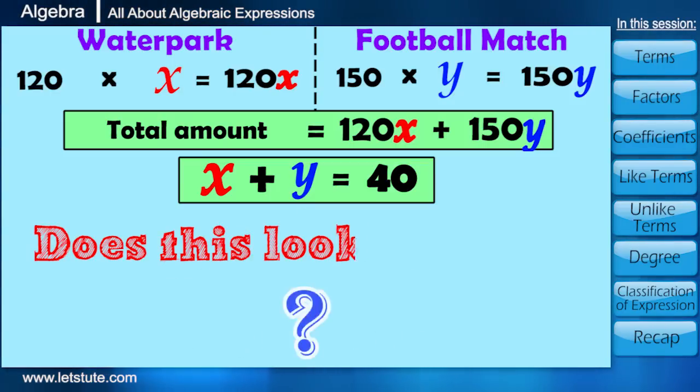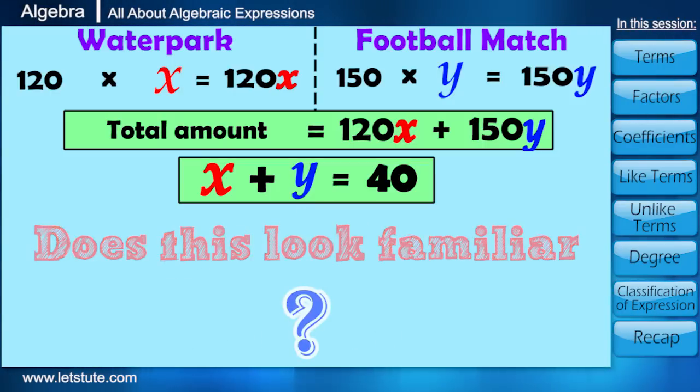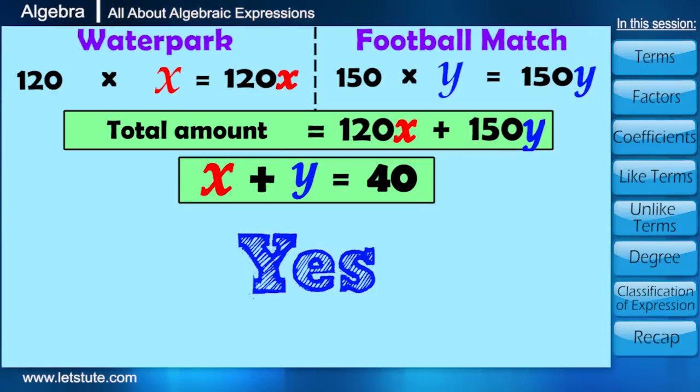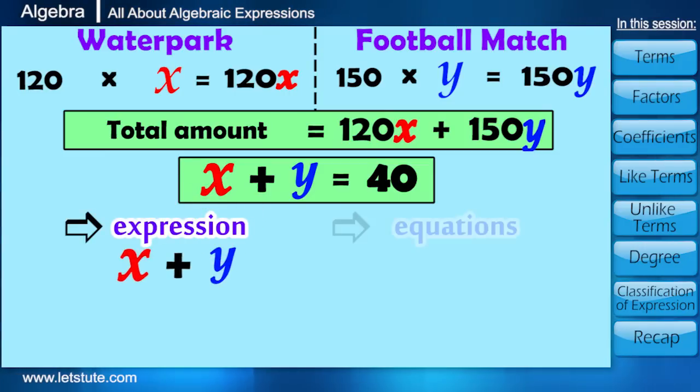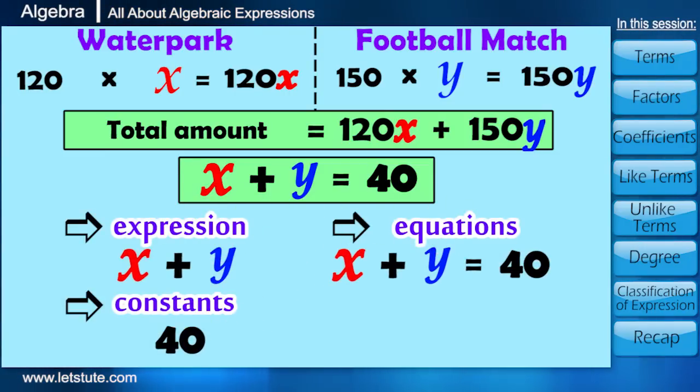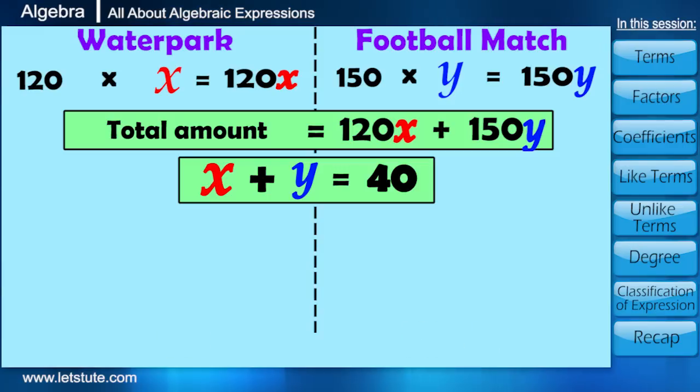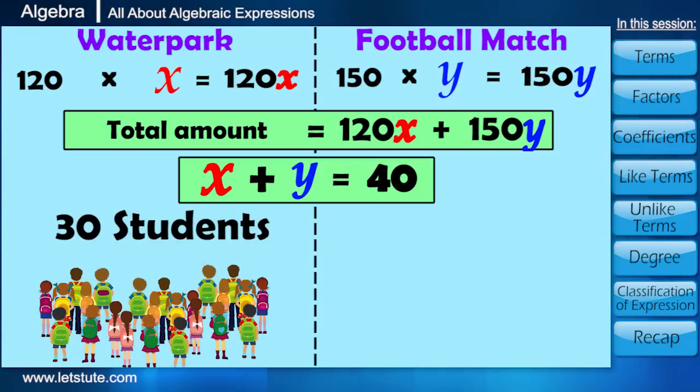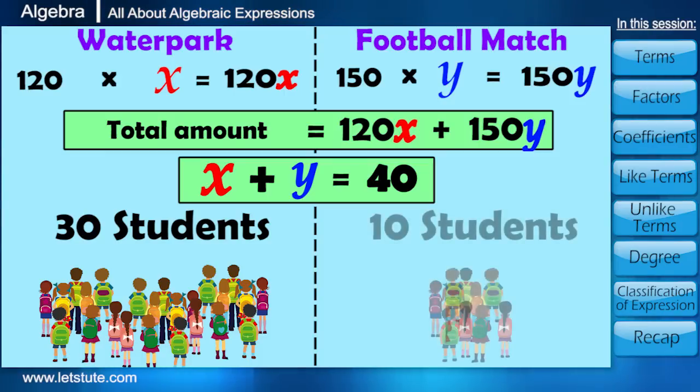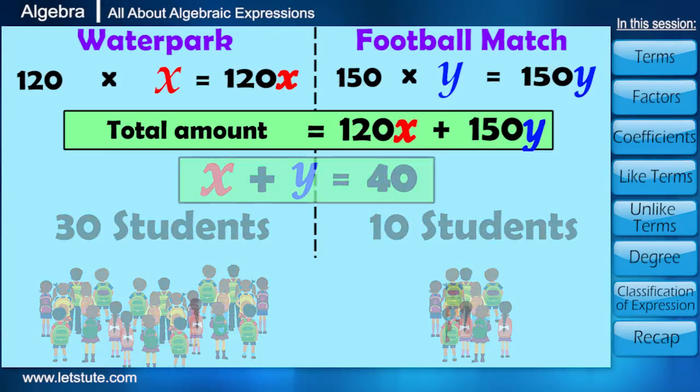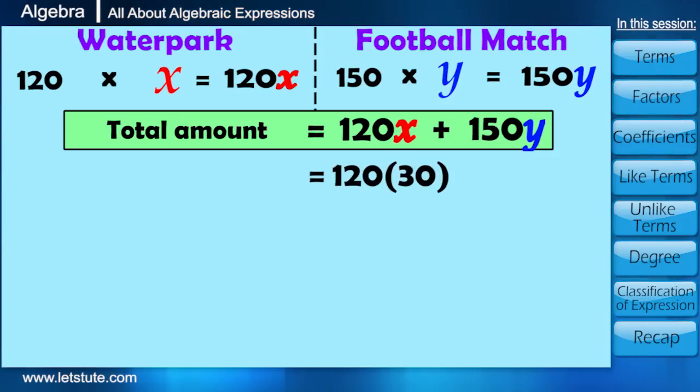Does this look familiar? Yes. In our previous session, we have studied about algebraic expression, equations, constants and variables. So if 30 students are going for water park and 10 are going for football match, then total amount will be 120 into 30 plus 150 into 10, that is 5100 bucks.